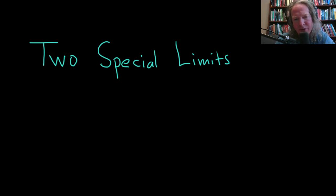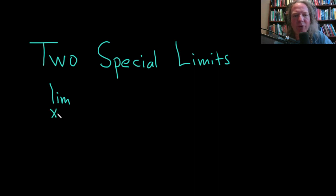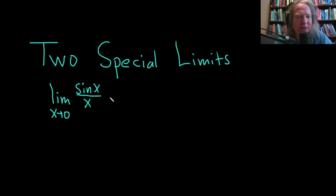Let's discuss two special limits that come up a lot in calculus. The first one is the limit as x approaches 0 of sin x over x. This is basically something you want to memorize — it's equal to 1.